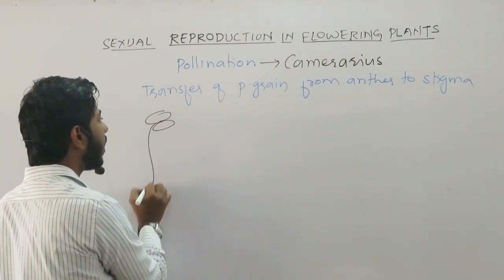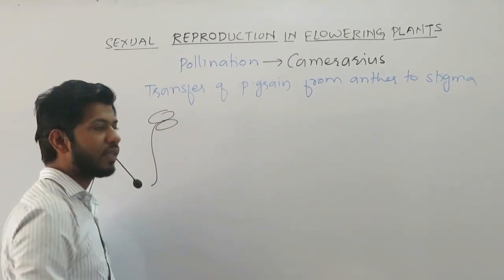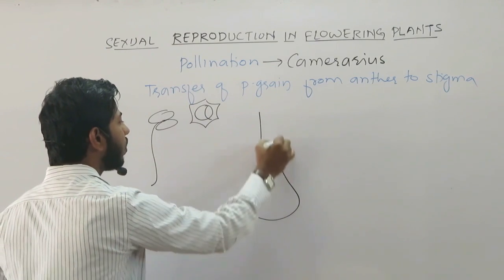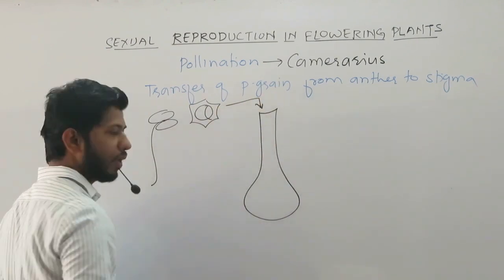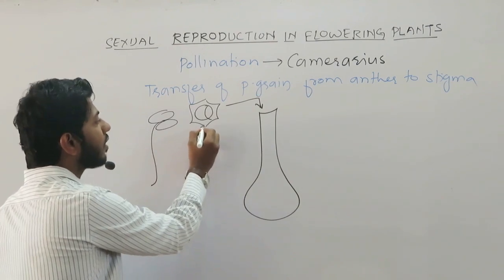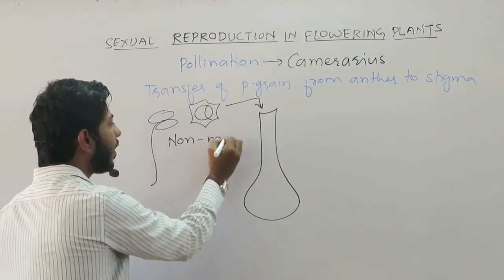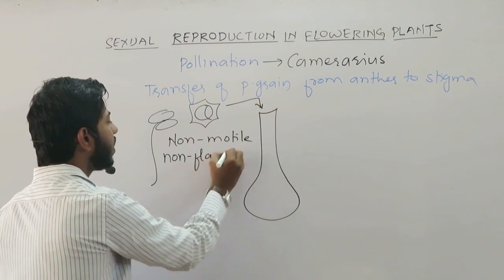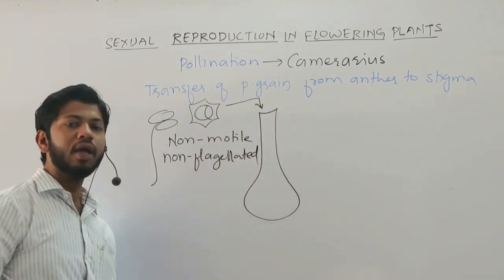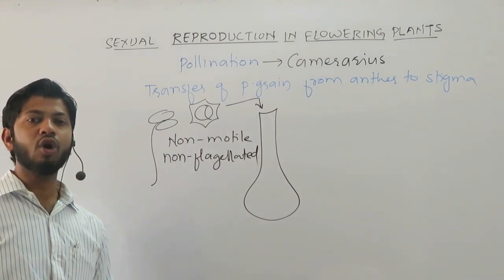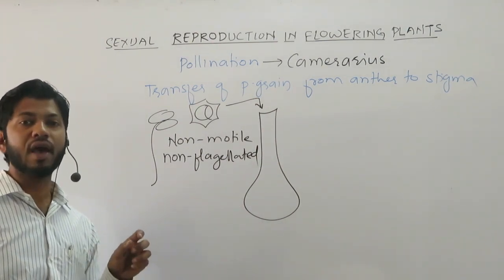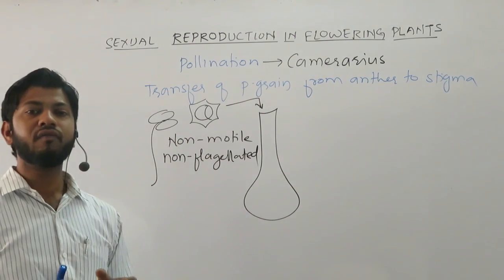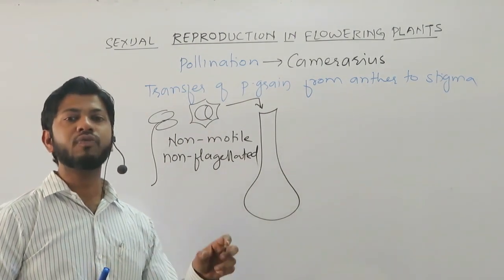Let's suppose this is a bi-lobed anther. After dehiscence of this anther, bicellular pollen grain is released and deposited on the topmost part of the carpel, that is the stigma. However, the pollen grain is non-motile because it does not have flagella — it is non-flagellated. That's why pollen grain by itself cannot move to the stigma, and therefore some external agencies are required which help pollen grain transfer to the stigma.